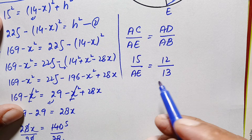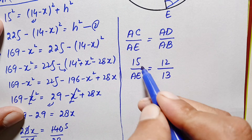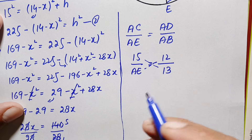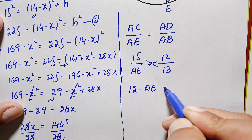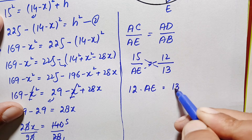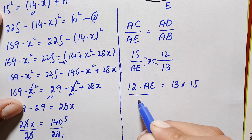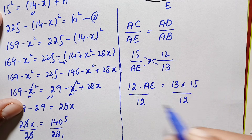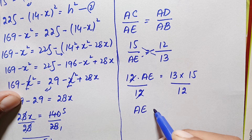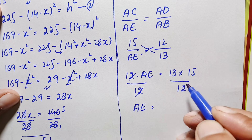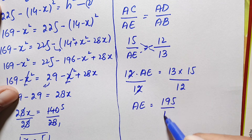Now let us substitute the values. The value of AC is 15 units, AE is the diameter of the circle which is not yet given, AD is 12 units, and AB is 13 units. So this becomes: 15 divided by AE equals 12 divided by 13. Cross multiplying: 12 times AE equals 13 times 15. Dividing both sides by 12, AE equals 13 times 15 divided by 12, which is 195 divided by 12.